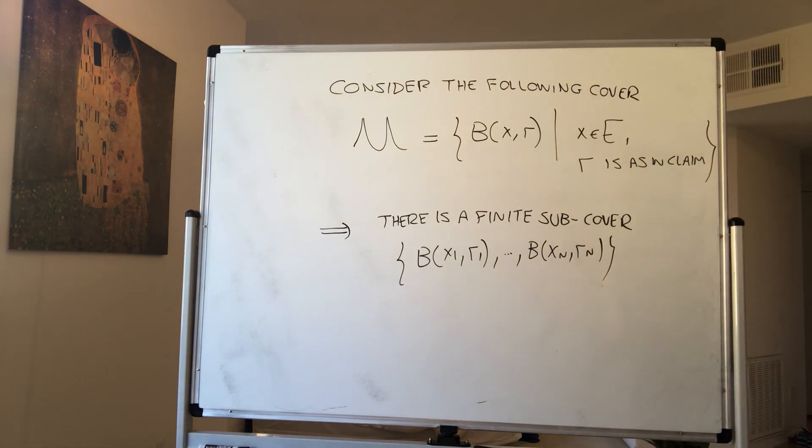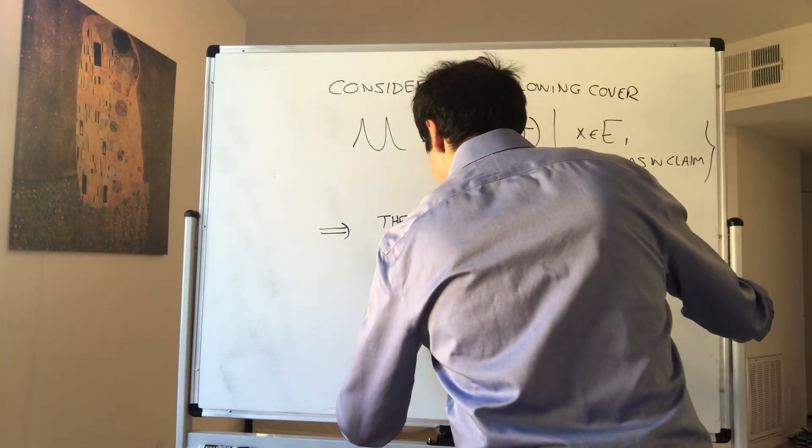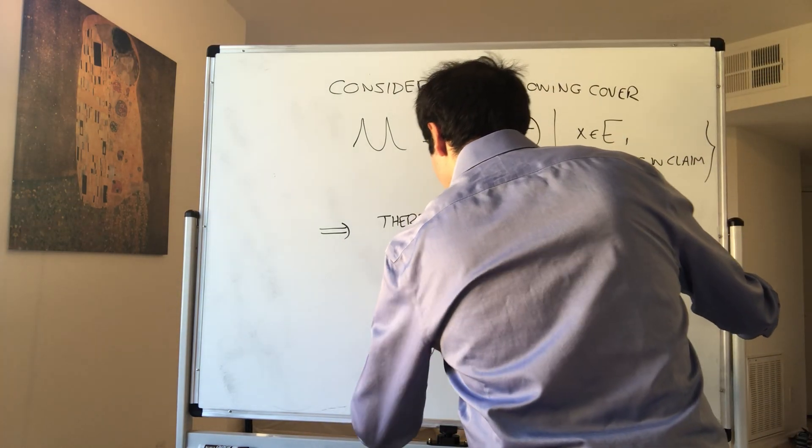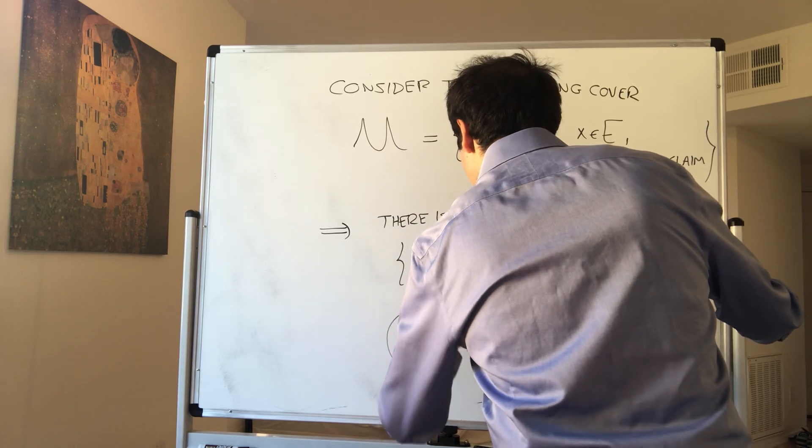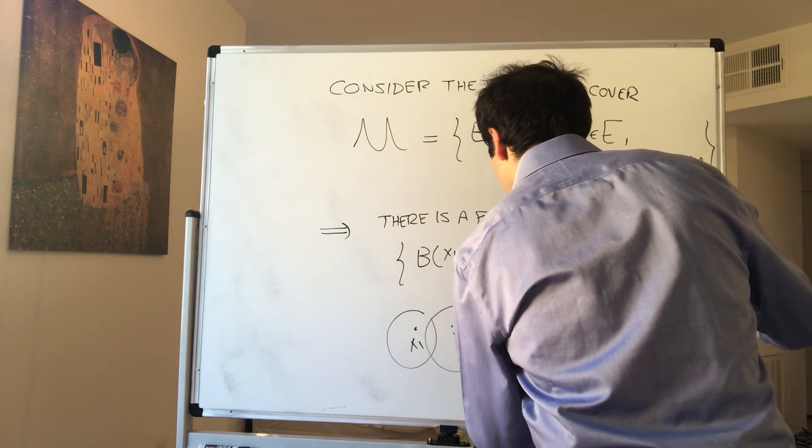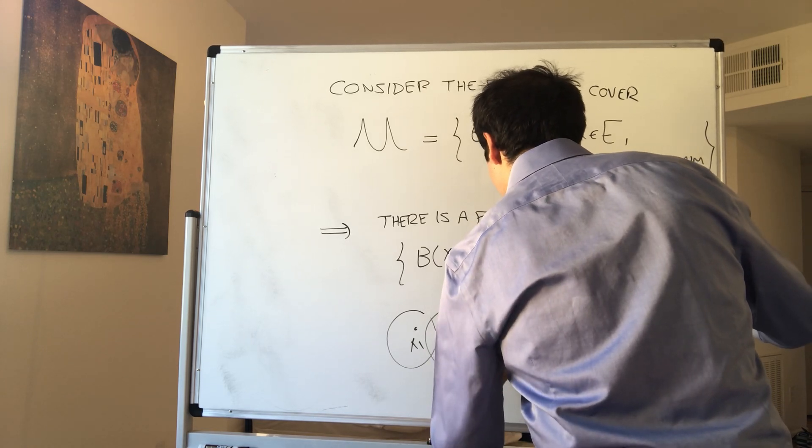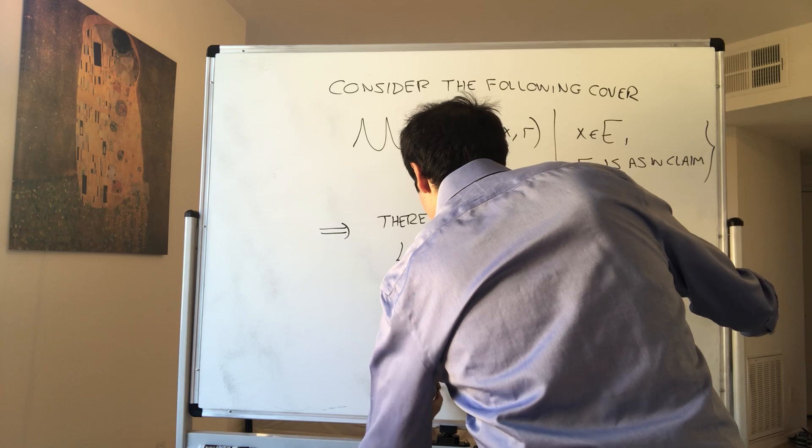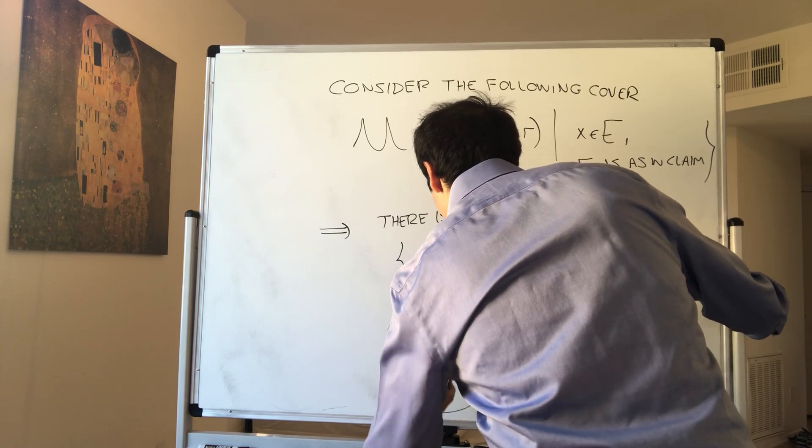All right, but that's a contradiction, because what is happening, it's quite neat. You see, those N balls, they cover the whole space. Those N balls, they cover the whole space, so X3, dot dot dot, and then XN, RN.